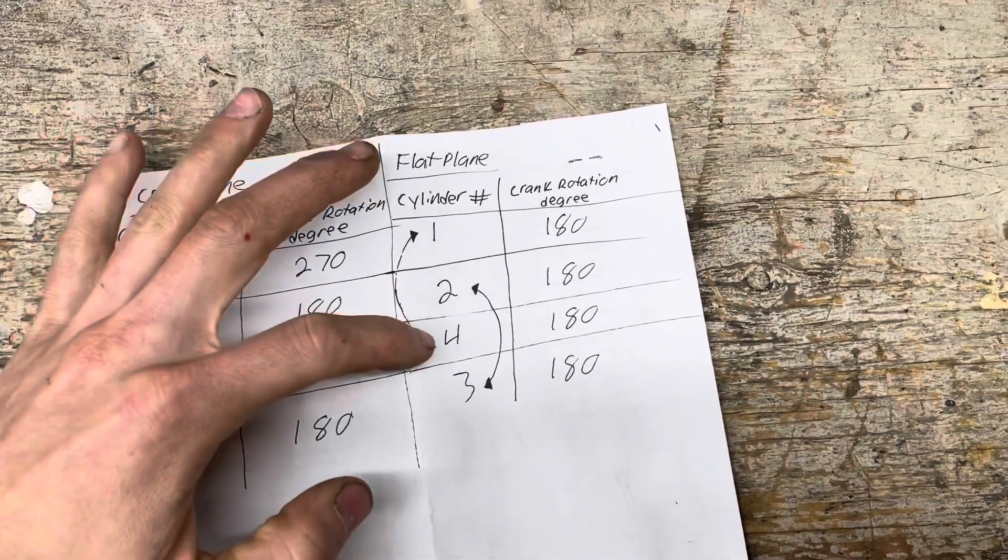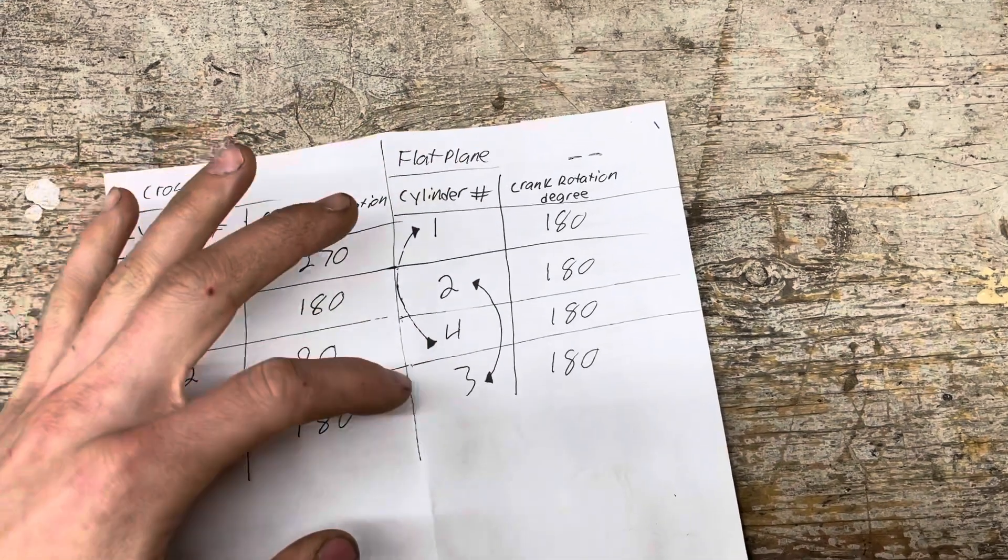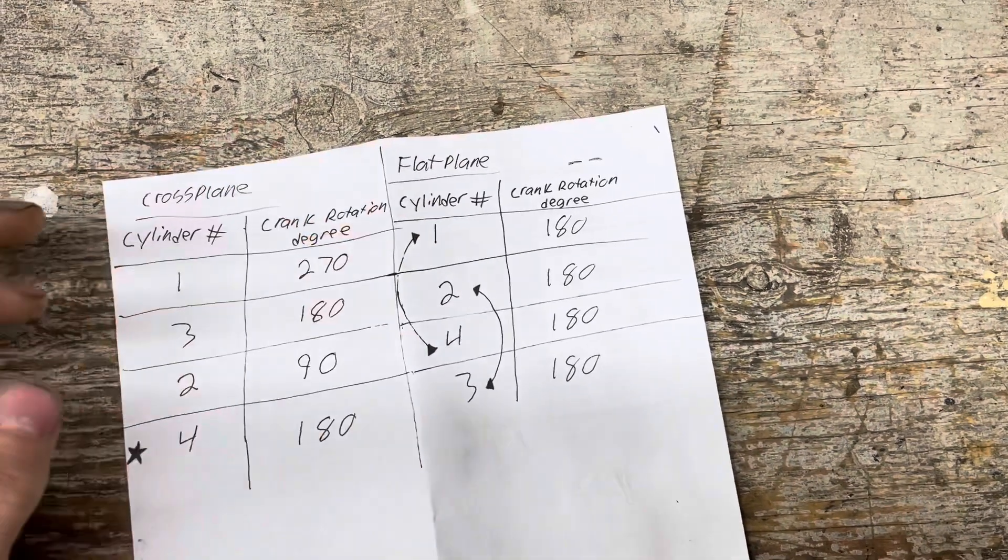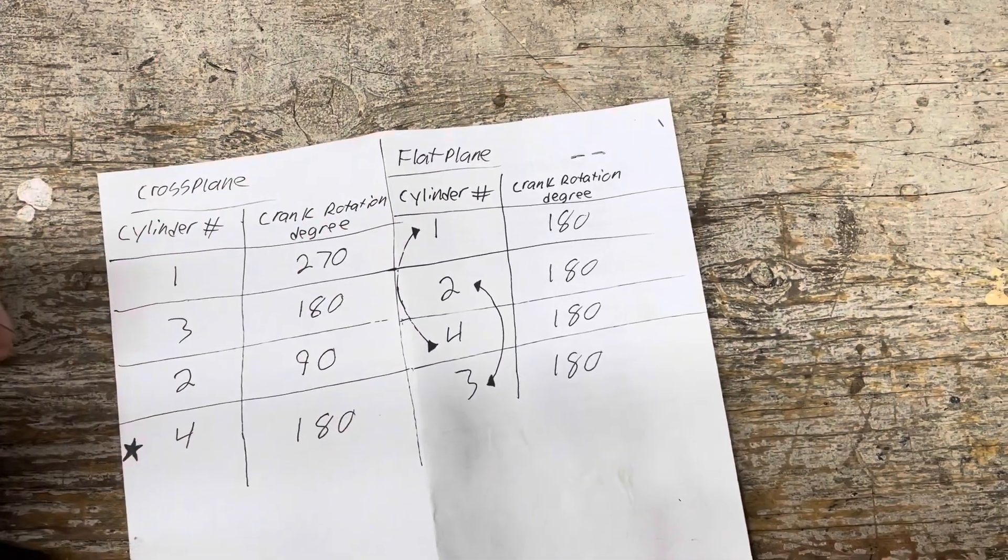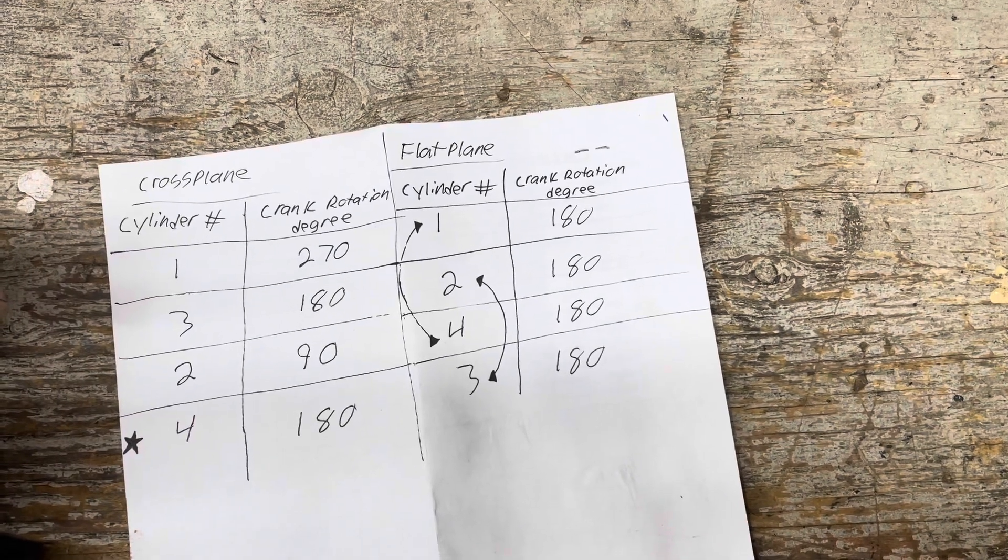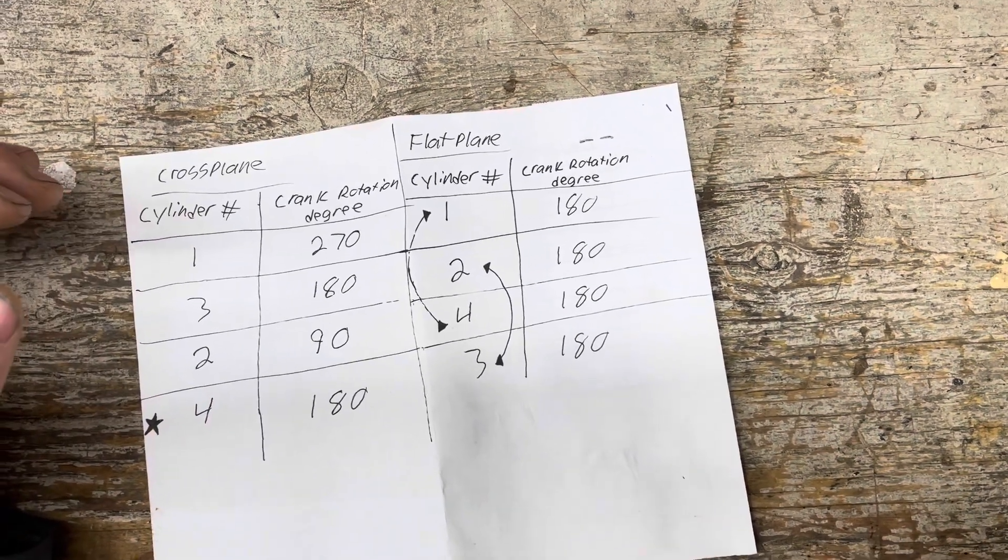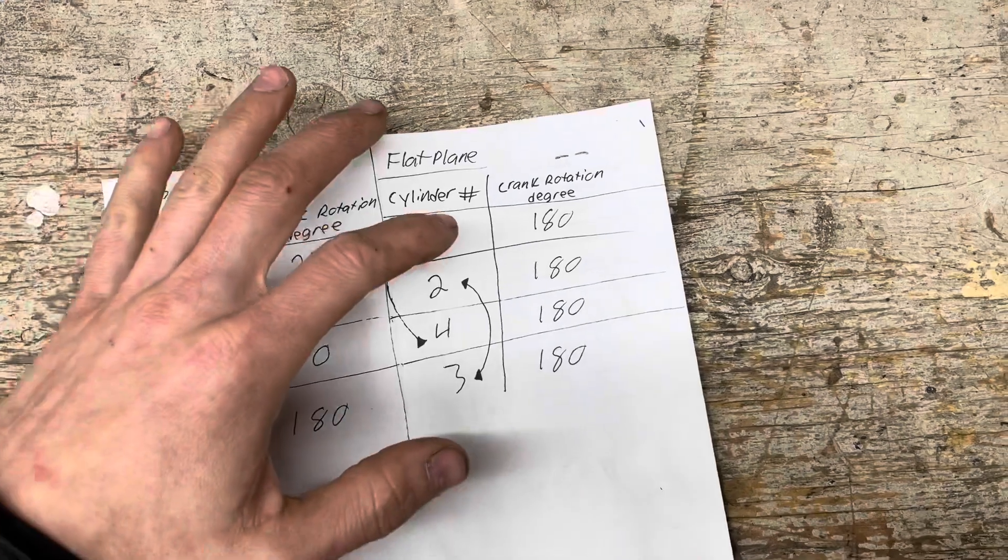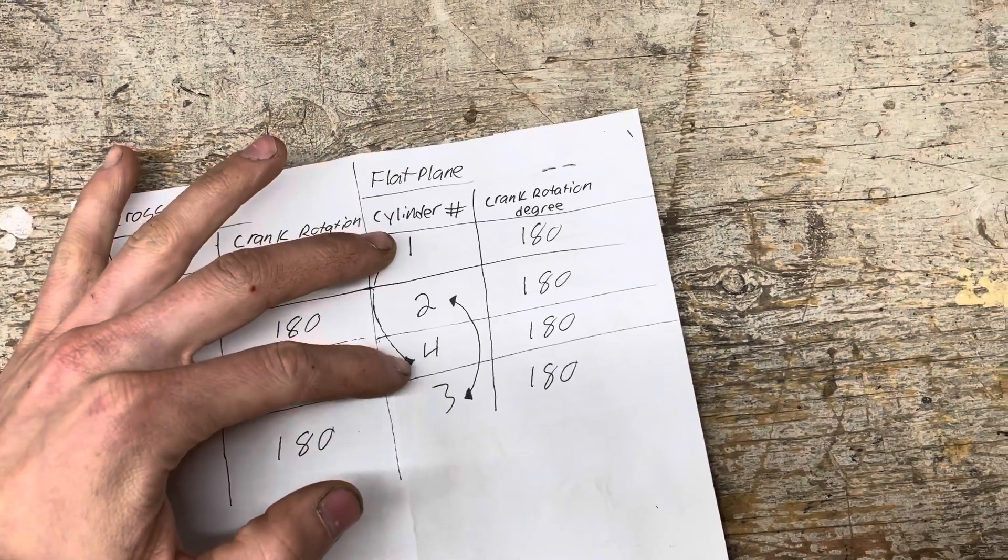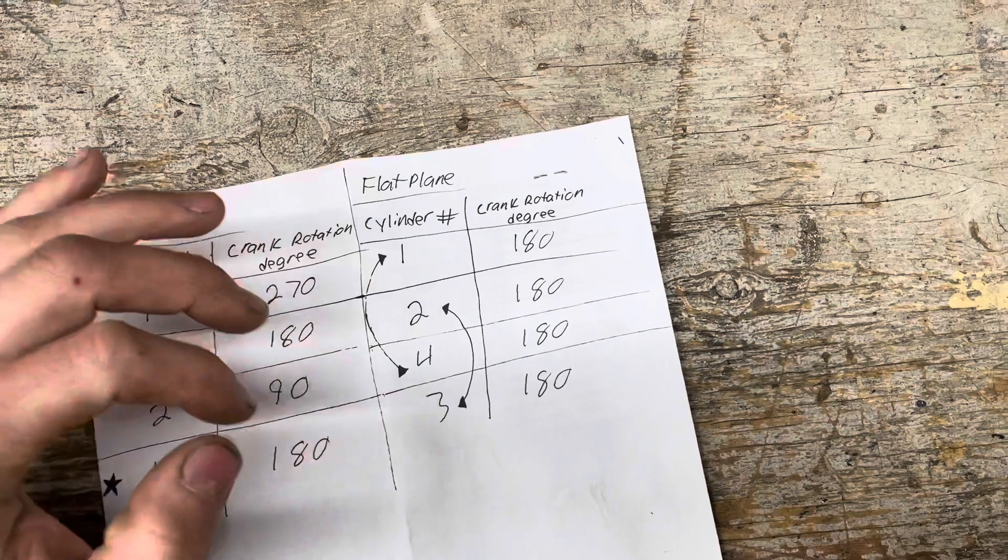Power stroke 180 degrees. Then cylinder four 180 degrees. Cylinder number three 180 degrees. And you're back to top dead center on cylinder number one on your power stroke. So as you can see this would be a very smooth running engine. It's very balanced. One and four being synced together, two and three being synced together.